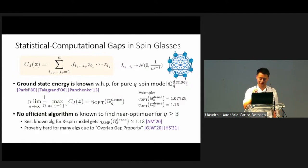It's currently there is no efficient algorithm known to find a near optimizer whenever Q is greater than or equal to 3. For example, if you look at the three-spin model in particular, the best known algorithm for this is something called the approximate message passing. It achieves a value that's 1.13, which is strictly worse than 1.15. It turns out that this number is not some arbitrary number. This number is a provable barrier for many algorithms due to the presence of something called the overlap gap property in the spin glass problems.